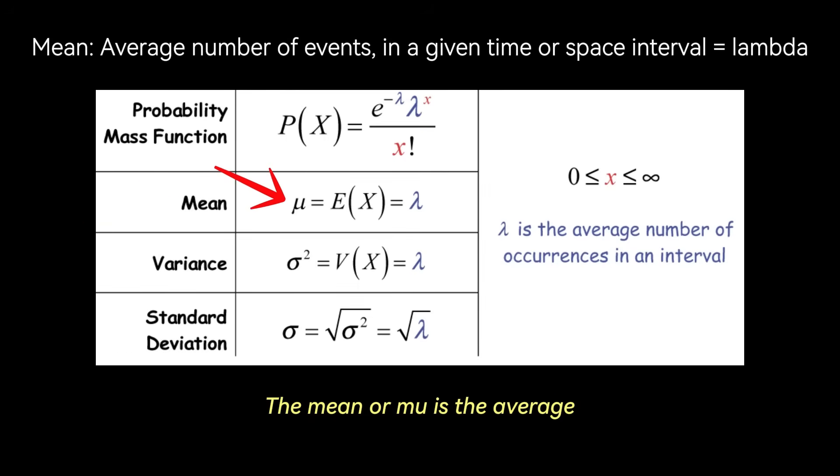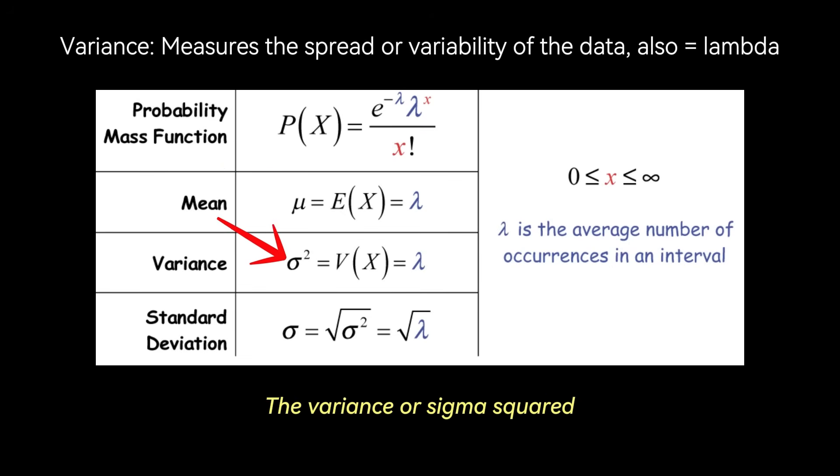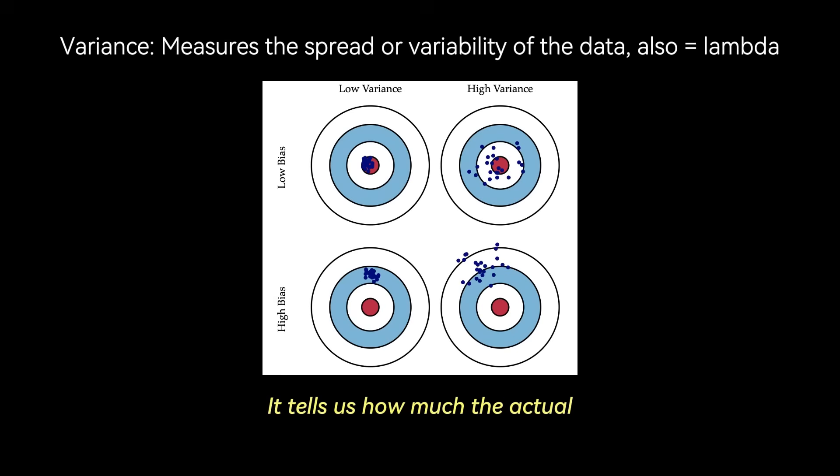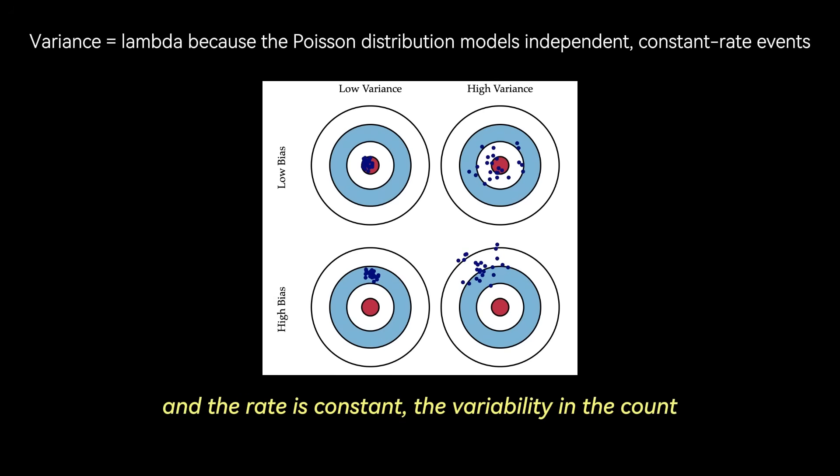The mean, or mu, is the average or expected number of events in an interval, and it is simply equal to lambda. The variance, or sigma squared, measures the spread or dispersion of the data around the mean. For the Poisson distribution, the variance is also equal to lambda. So the variance is the spread around the mean. It tells us how much the actual number of events we observe in different intervals tends to deviate from this average. Because the events are independent and the rate is constant, the variability in the count is directly tied to how many events we expect on average.